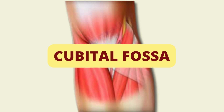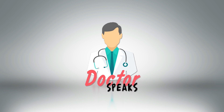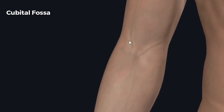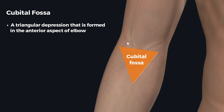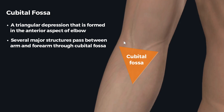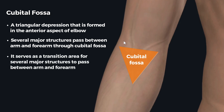Welcome back. In this tutorial we're going to talk about the anatomy of the cubital fossa. The cubital fossa is a triangular depression that lies in the anterior aspect of the elbow joint. It is important as an anatomical landmark because several major structures pass between the arm and forearm through the cubital fossa. We're going to discuss the cubital fossa in terms of its boundaries and contents.